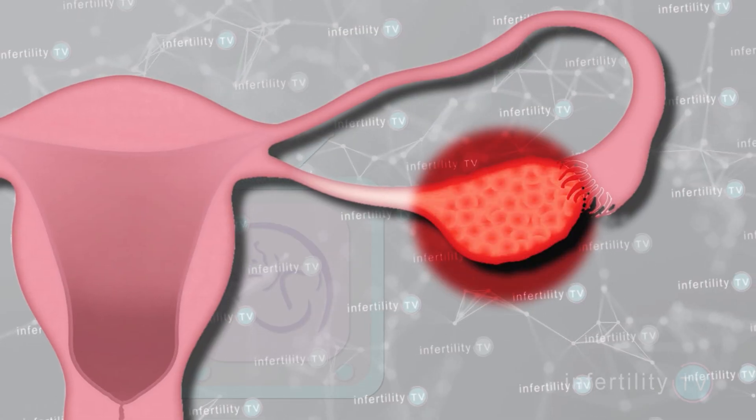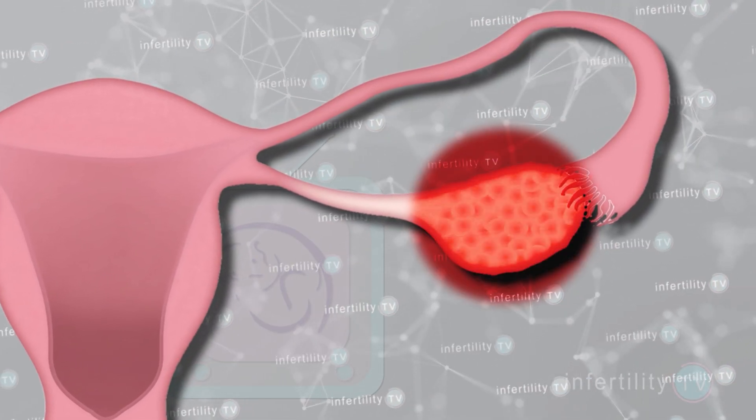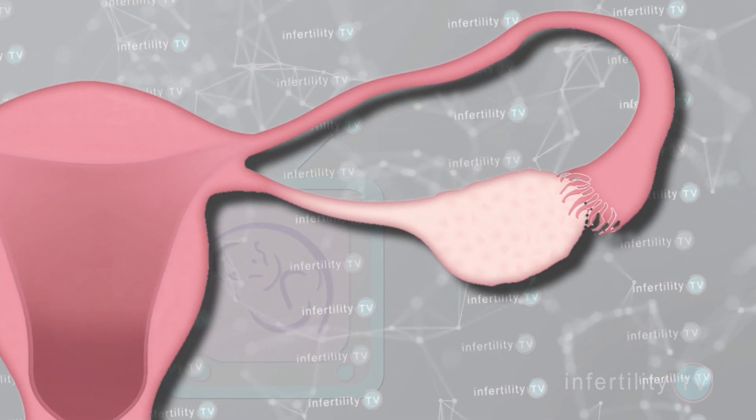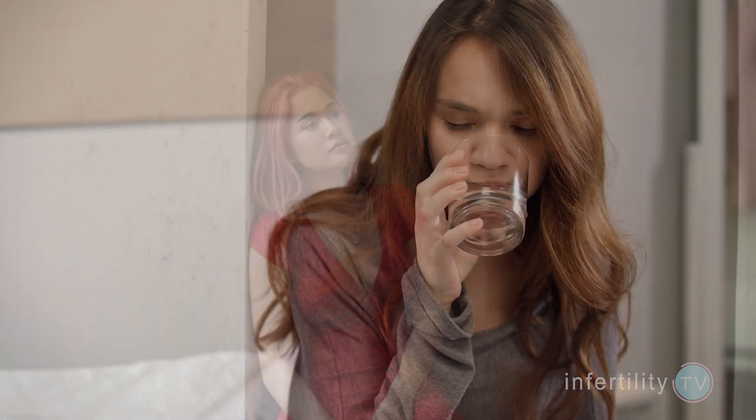AMH cannot determine how quickly your fertility will decline. AMH only gives you a snapshot of where your ovarian reserve is right now. It does not tell you how fast it is declining — you won't be able to predict your AMH level in a year or in five years. However, if you are young and your AMH level is low, you may go through menopause at an earlier age than average. How much earlier cannot be predicted.